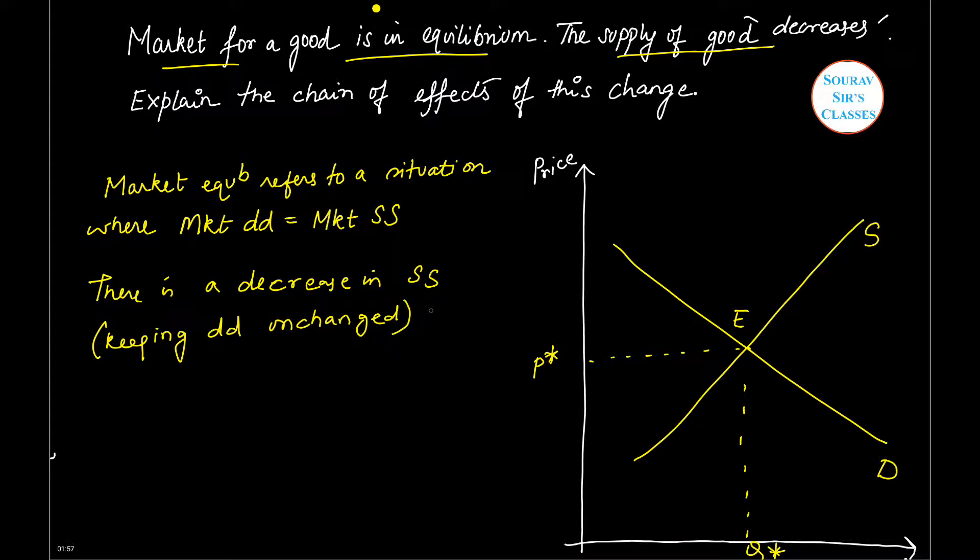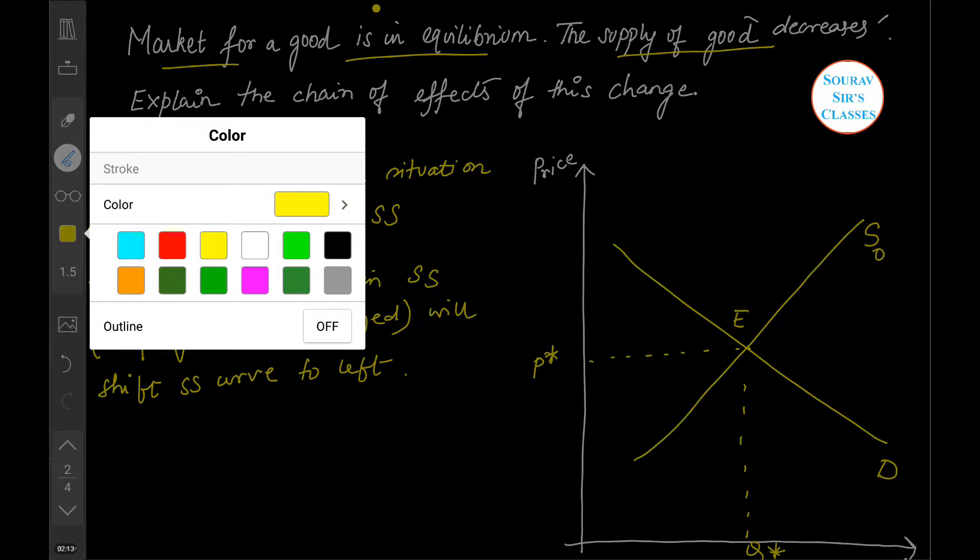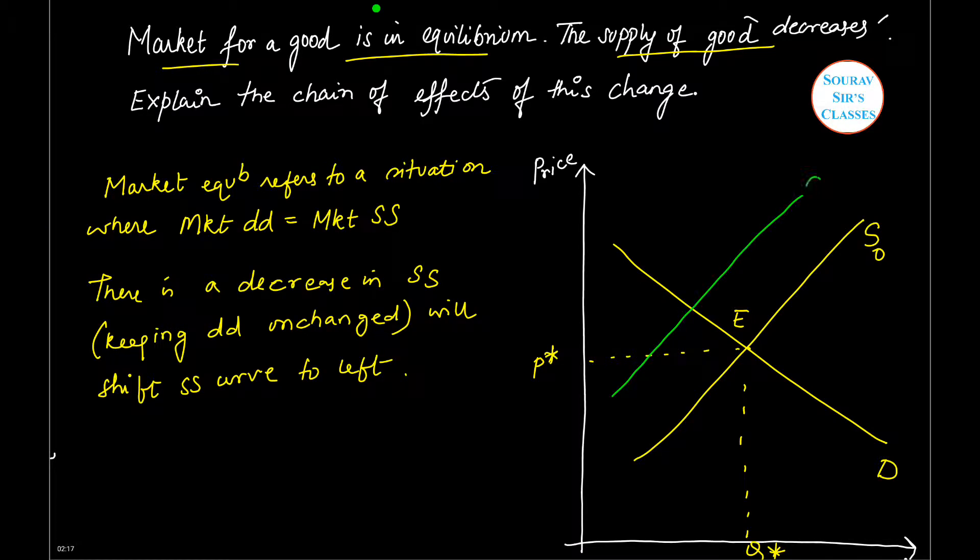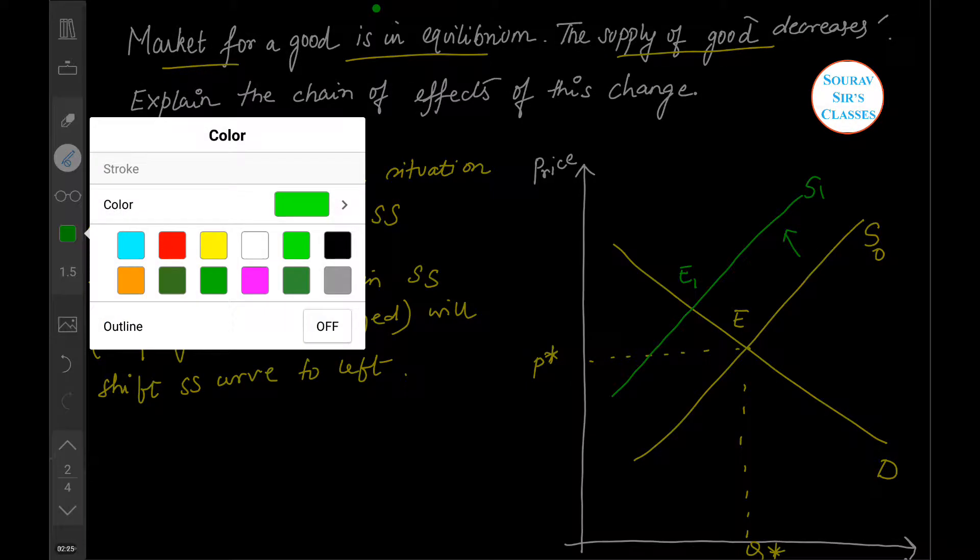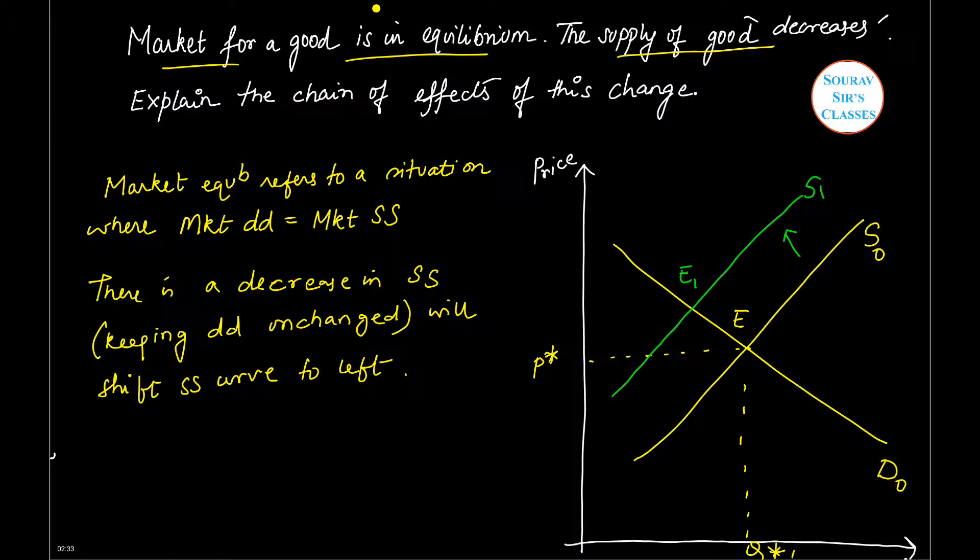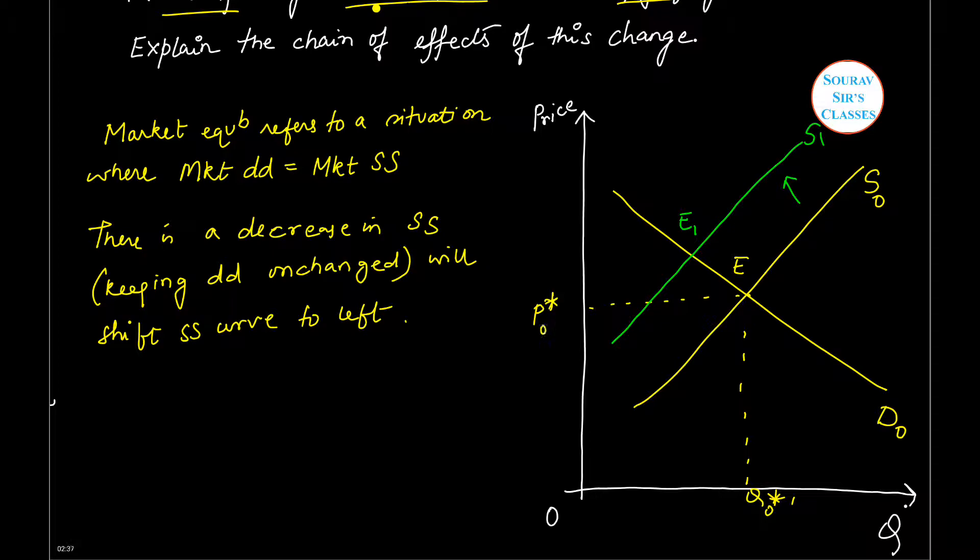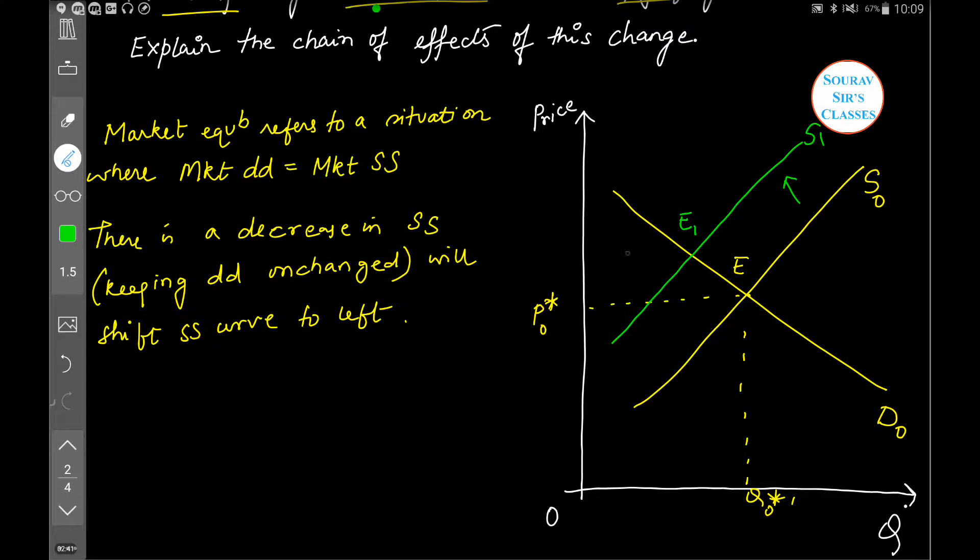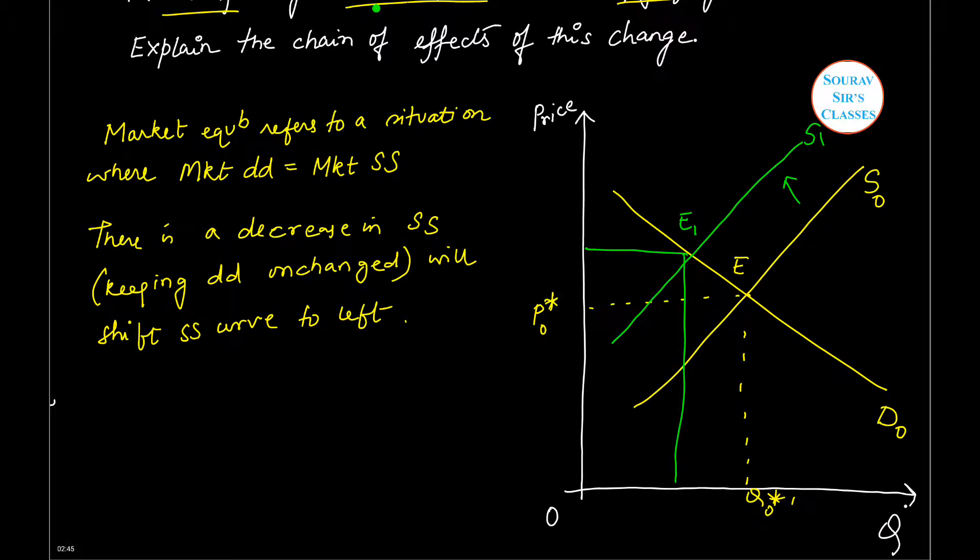We will shift the supply curve to left. Let us see what will happen. So if this is S0, supply curve shifts to the left, this is S1. New equilibrium occurs at E1. So this is E0, D0, Q0, P0. And then we see that price increases and quantity falls. Equilibrium quantity falls and equilibrium price increases.